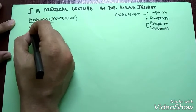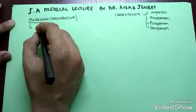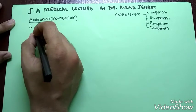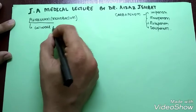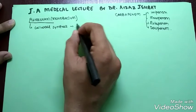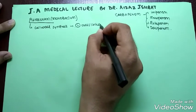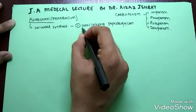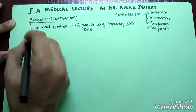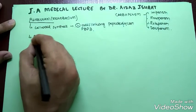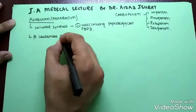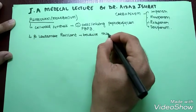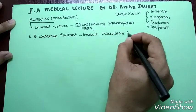Now coming to aztreonam — I call aztreonam a blessing drug because it has many good things. First of all, we start with the mechanism of action, and thanks to penicillin we don't have to memorize it because it has a similar mechanism of action. It inhibits cell wall synthesis by inhibiting the cross-linking of peptidoglycan by binding to the penicillin-binding protein.